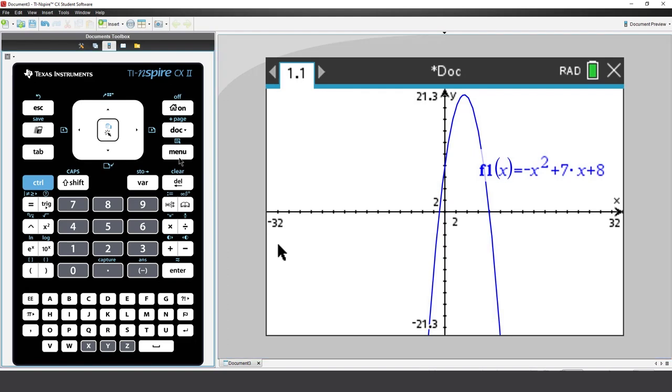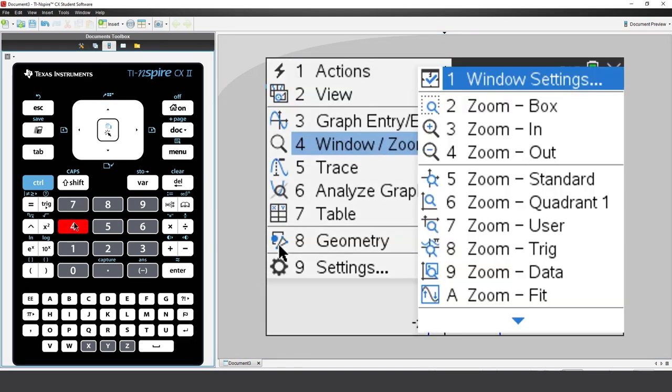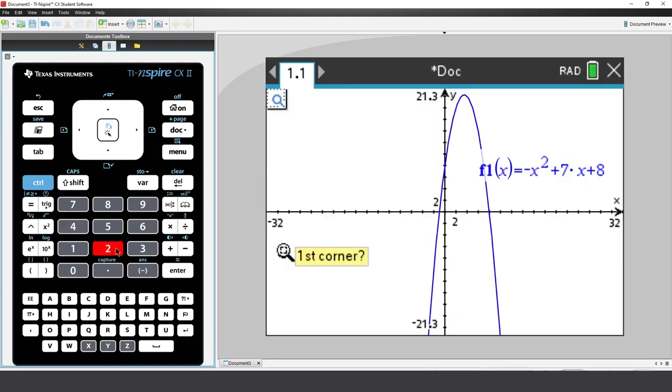I'll go back to the Windows Zoom menu. This time I'll select Zoom Box. Zoom Box is a bit like the selection tool in a drawing package. Move the mouse over the top left corner of the region you require and click.